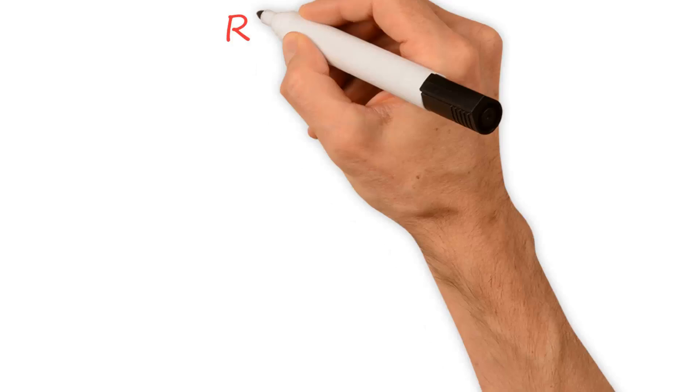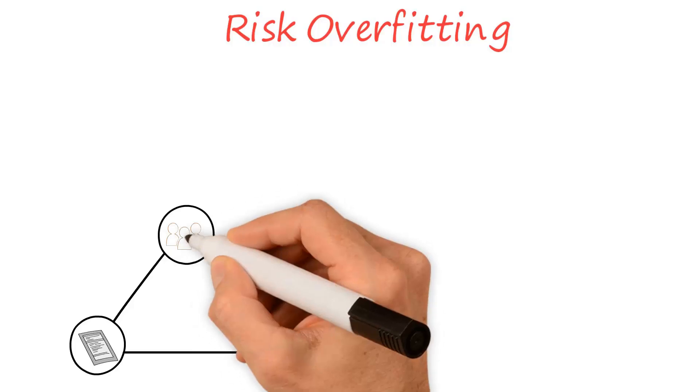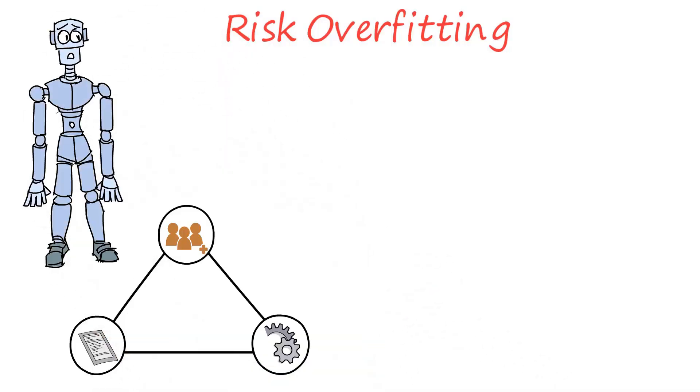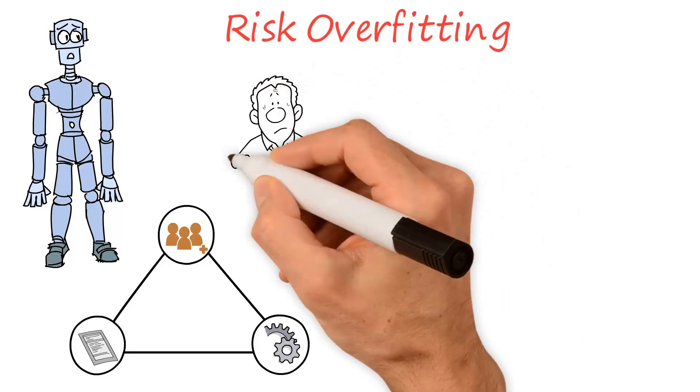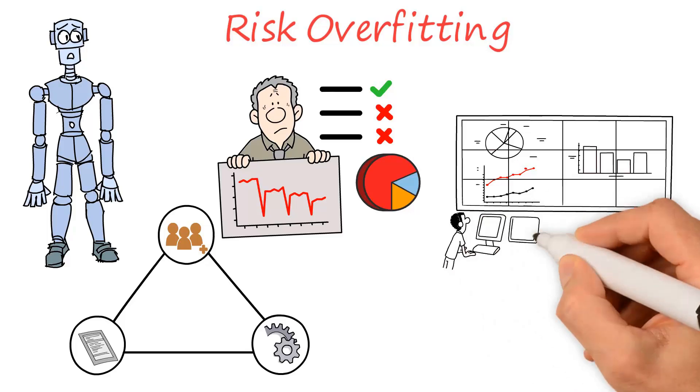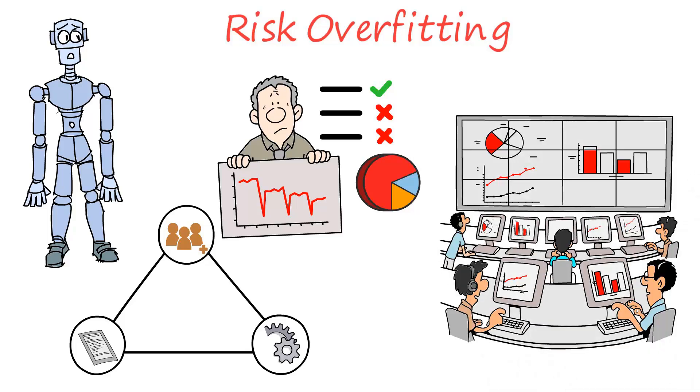Another challenge is the risk of overfitting, which occurs when the machine learning algorithm becomes too closely tied to the training data and fails to generalize to new data. Overfitting can result in poor performance and inaccurate predictions, so it's important to carefully monitor the performance of machine learning algorithms to ensure that they're not overfitting.